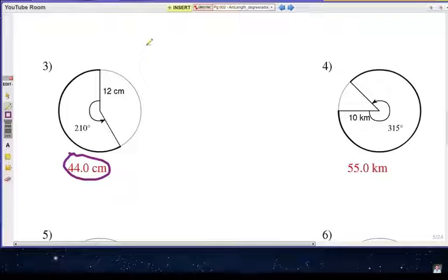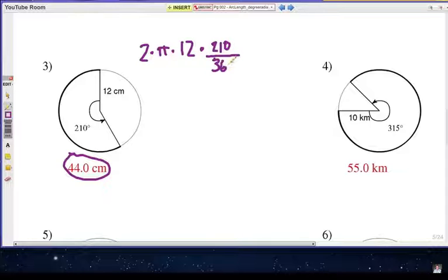Well, the entire circumference is 2 times pi times the radius of 12. And yes, we're going to multiply it by the central angle of 210 over 360. That's the part of the circle we're talking about.